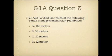Question 3. On which of the following bands is image transmission prohibited? A. 160 meters. B. 30 meters. C. 20 meters. Or D. 12 meters.